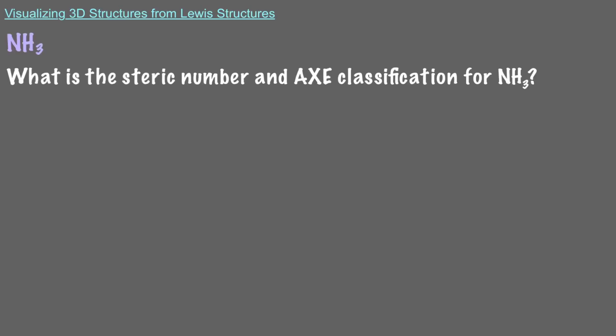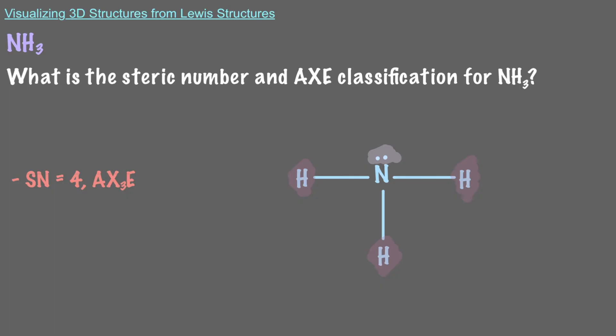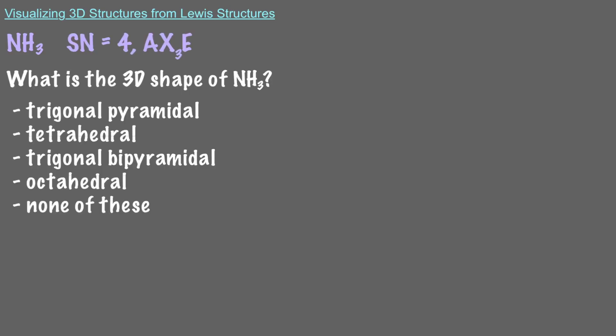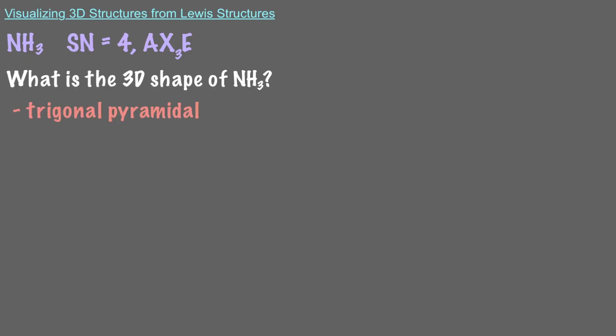Let's try it with a different molecule: NH3. The Lewis structure for NH3 looks like this. We have three atoms and one lone pair attached to our central atom. So the steric number is 4, and this molecule classifies as AX3E. Since the molecule is AX3E, its shape is trigonal pyramidal.